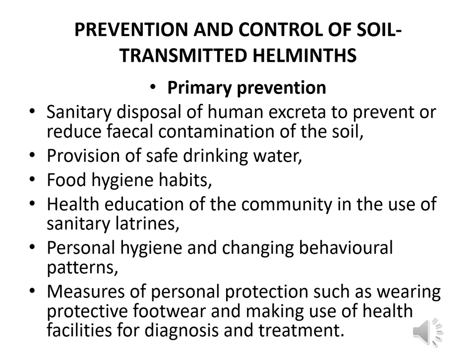Now we will discuss the prevention and control of soil-transmitted helminths. Primary preventive measures include sanitary disposal of human excreta to prevent or reduce fecal contamination of the soil; provision of safe drinking water; food hygiene habits; health education of the community in the use of sanitary latrines; personal hygiene and changing behavioral patterns; measures of personal protection such as wearing protective footwear; and making use of health facilities for diagnosis and treatment.